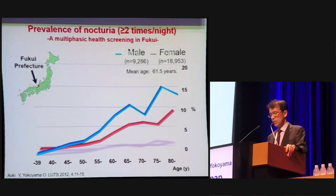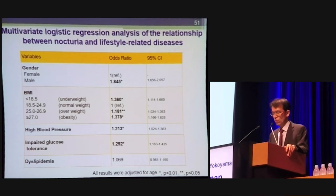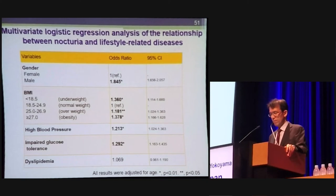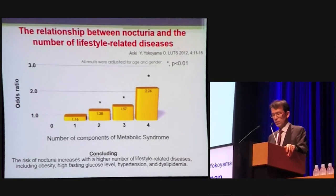We collected data on 28,000 individuals who participated in a multi-basic health screening in Fukui, Japan. The data showed that the prevalence of nocturia increased with age, and this tendency was remarkable for men. In multivariate analysis, a significant relationship was found between nocturia and: increasing age, male gender, low and high BMI, high blood pressure, and impaired glucose tolerance. We analyzed the risk of nocturia increasing with a higher number of lifestyle-related diseases including obesity, high fasting glucose levels, hypertension, and dyslipidemia.